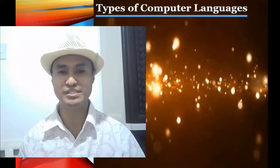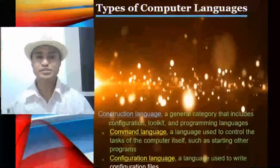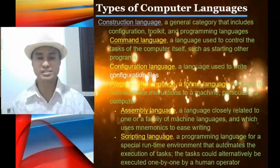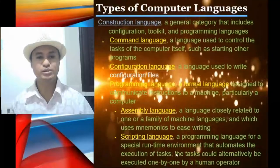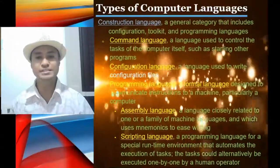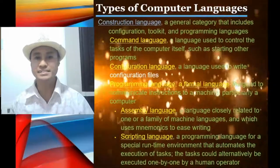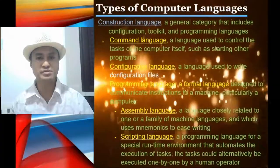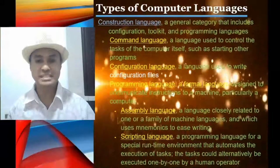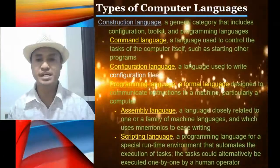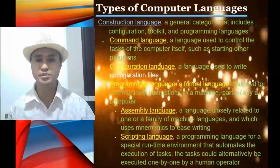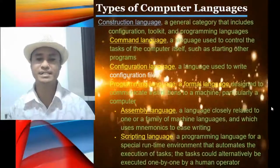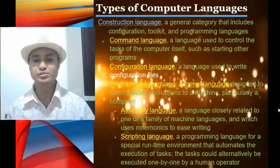Let's talk about types of computer languages — a general category that includes configuration, toolkit, and programming languages. Under it we have command language, a language used to control the tasks of the computer itself such as starting other programs. Configuration language is a language used to write configuration files. Programming language is a formal language designed to communicate instructions to a machine, particularly a computer.